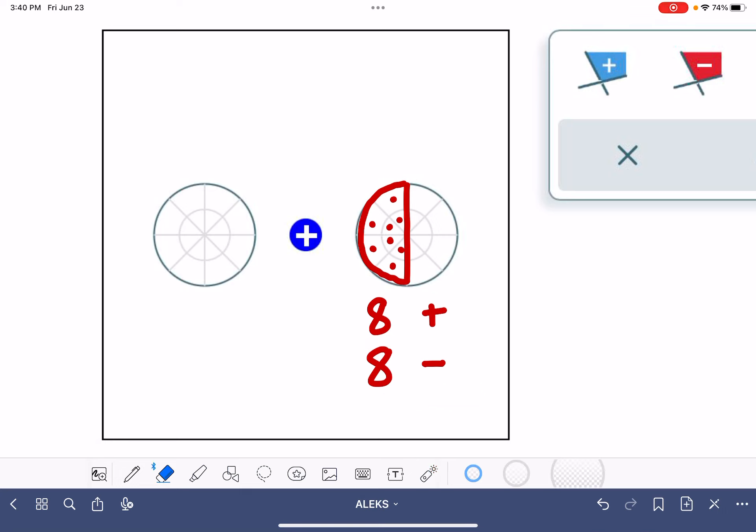Because like charges repel each other, the eight positive charges of this object will get as far away from that positive point charge as possible. So the eight positive charges will move over onto this half of the object.